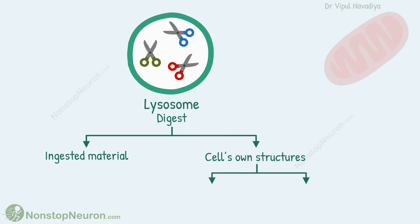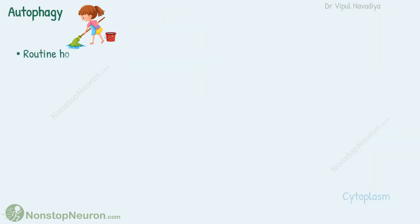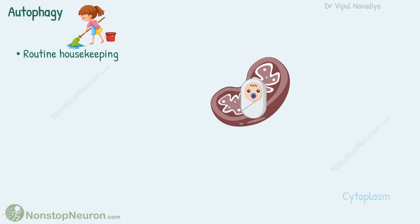Broadly, there are two processes in this: autophagy and autolysis. First, let's see autophagy. It's a routine housekeeping process of the cell. The organelles inside the cells get old and damaged with time, and such organelles are removed by autophagy.